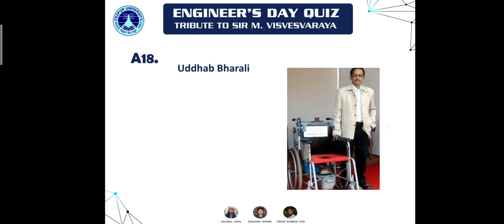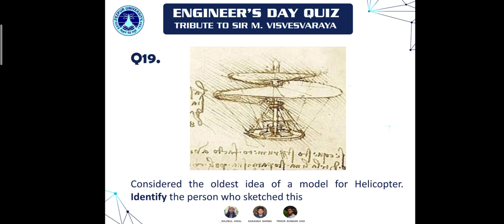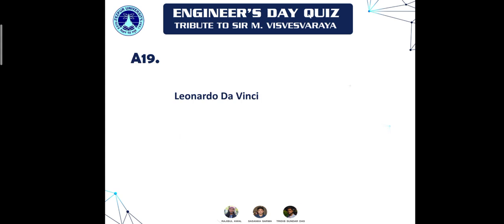Question nineteen: consider the oldest known model for a helicopter and identify the person who sketched it. This is one of the easier questions in the quiz. The answer is Leonardo da Vinci, the famous painter who also painted the Mona Lisa.